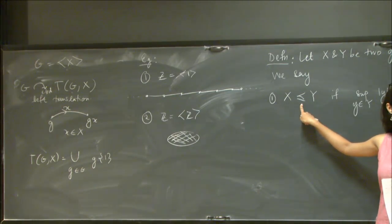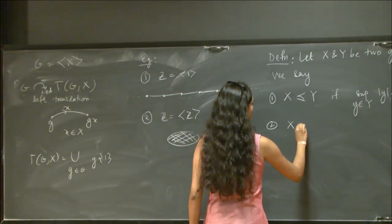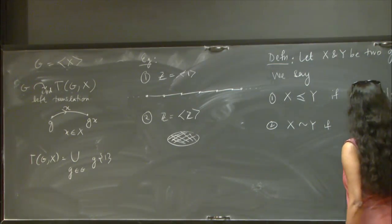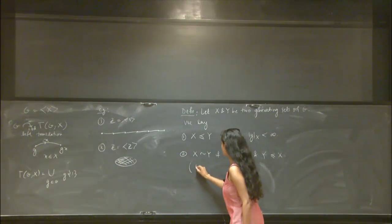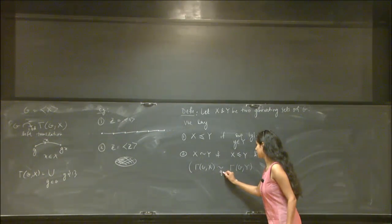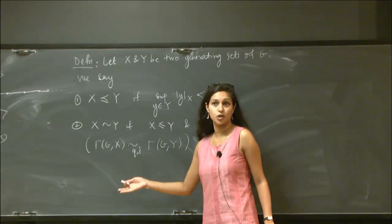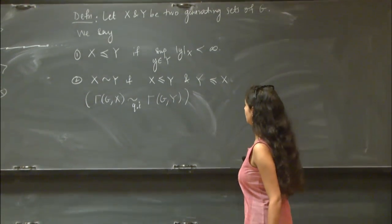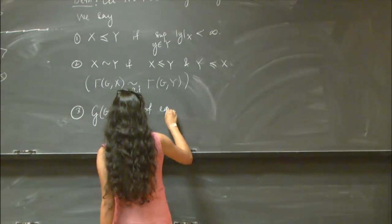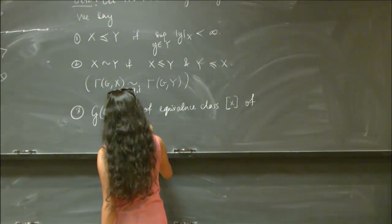This is a preorder relation which defines an equivalence relation: we say X is equivalent to Y if X is dominated by Y and Y is dominated by X. This is equivalent to the condition that the Cayley graph of G generated by X and the Cayley graph with respect to Y are quasi-isometric to each other — the identity map on vertices extends to a quasi-isometry. We define G(G) as the set of equivalence classes of generating sets of our group G.